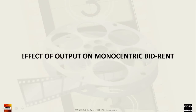In this video, we will explore the effect of production output on monocentric bid rent. Production is related to employment, and employment is related to income. This, in turn, is related to bid rents for the local real estate.